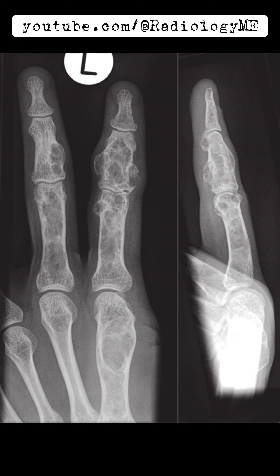But let's not jump to conclusions just yet. We should also be thinking about other differentials. Since these lesions are multiple, we might be considering something like Ollier's disease, or even Maffucci's syndrome. Ollier's disease is a condition where you see multiple enchondromas, usually affecting the small tubular bones of the hands and feet. What we're seeing here fits that picture pretty well.